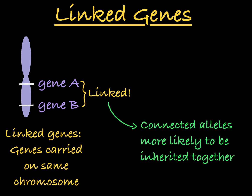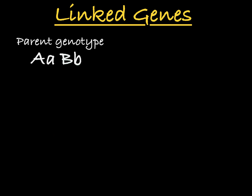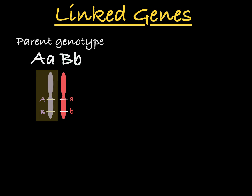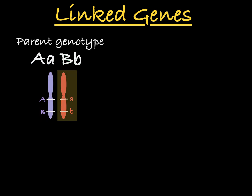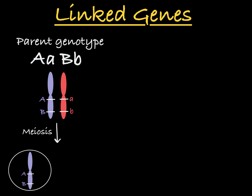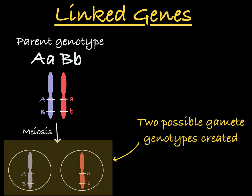Let's think back to our two-gene example. We have an organism heterozygous for gene A and gene B. If these genes are linked together on a chromosome, that would look like this. Here we see one chromosome with the dominant allele of both genes A and B, and the other with the recessive alleles for both genes. During meiosis, a gamete will either receive this chromosome or this chromosome.